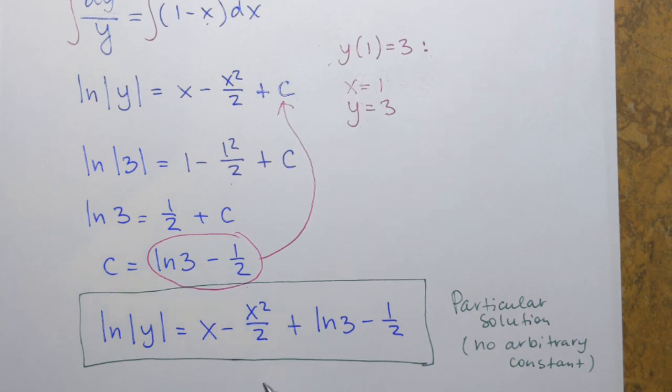So that's going to be the answer. As you can see, it's in the implicit form. y is not by itself. But I'm just going to leave it like that.